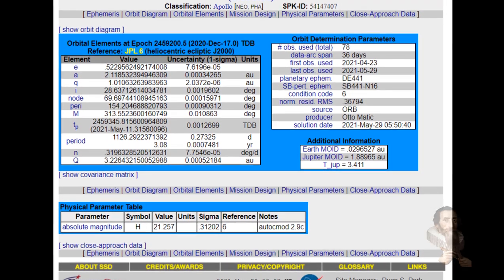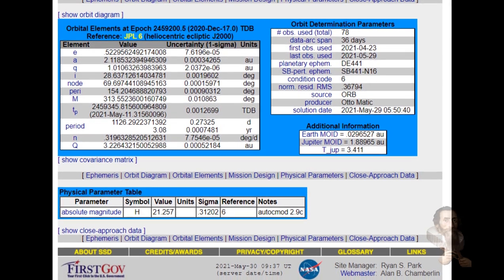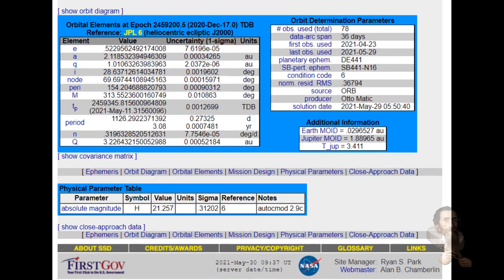The JPL estimates the size of the asteroid could be up to 1,082 feet in diameter, and that is roughly the size of three football fields combined.